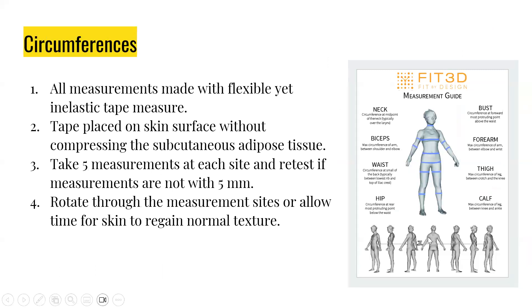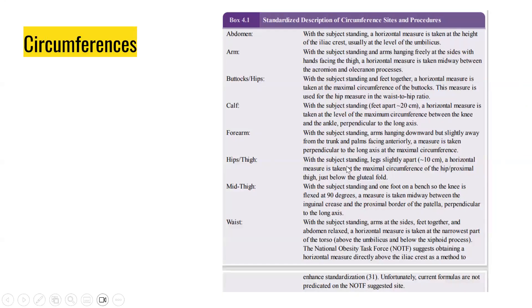For circumferences, all measurements are going to be performed with a flexible yet inelastic tape measure. The tape is placed on the skin surface without compressing the subcutaneous adipose tissue. You're going to take measurements at each site and retest if measurements are not within five millimeters. Rotate through the measurement sites or allow time for the skin to regain normal texture. The circumference sites include the abdomen, arm, hips, calf, forearm, thigh, mid-thigh, and waist.